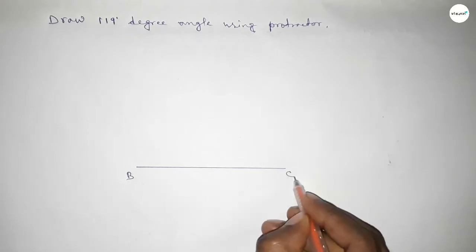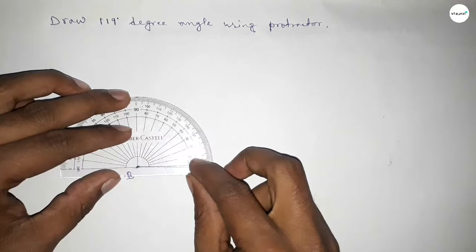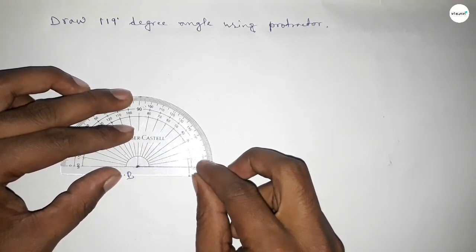Next, taking here B point and here C point. Now putting the protractor on the point B perfectly, then counting the angles.